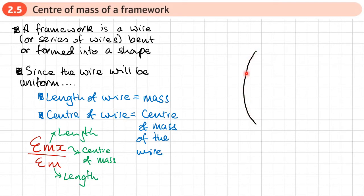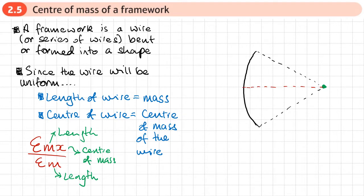The last thing we need to know is how do we find the center of mass of a curved piece of wire — specifically the arc of a circle. The dotted lines show where the full circle would be. The center of mass is going to be along the line of symmetry, and we need to know the angle alpha — which needs to be in radians.